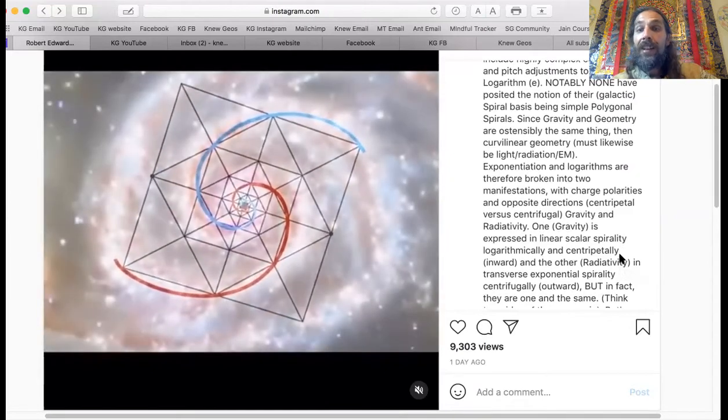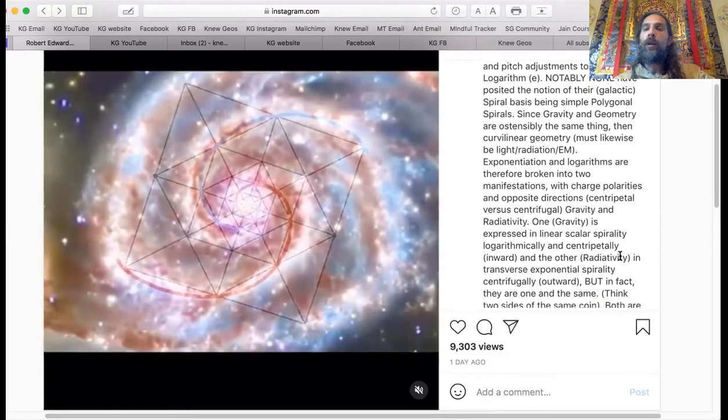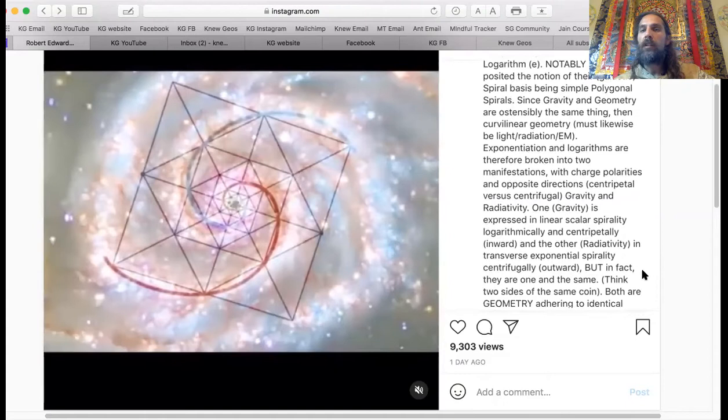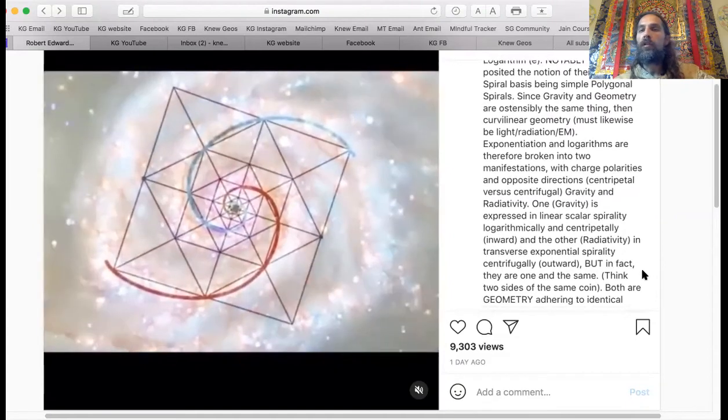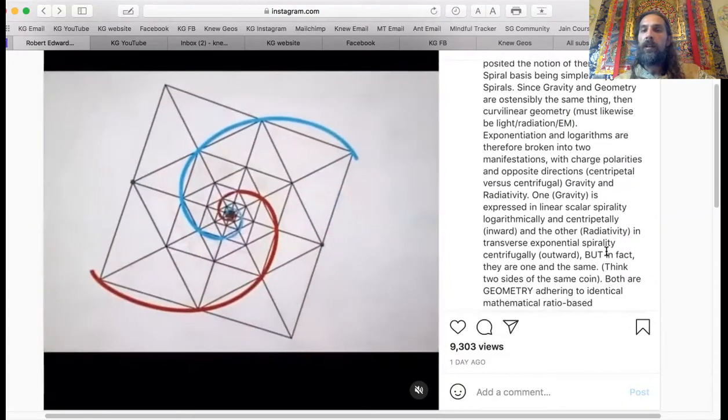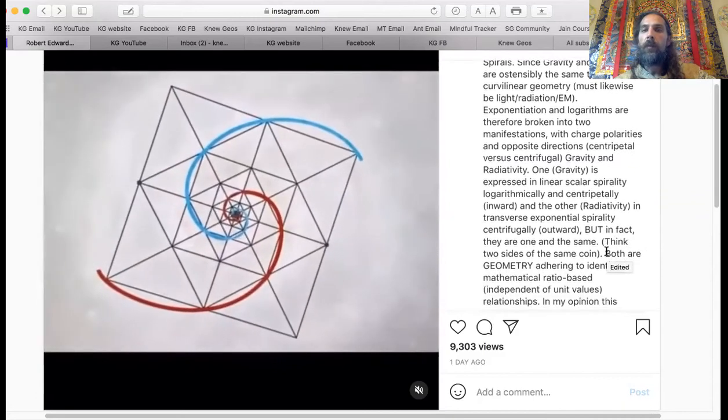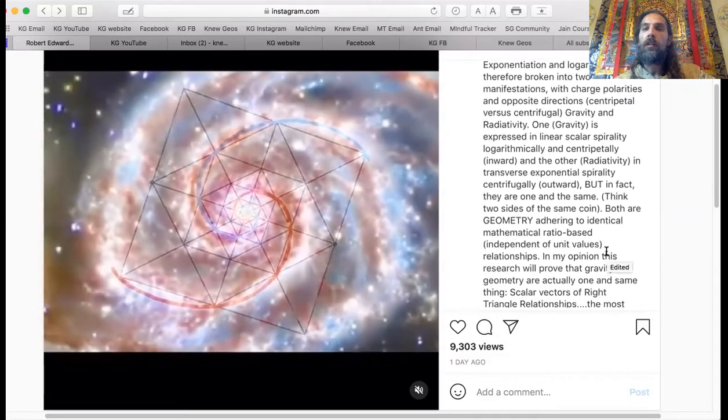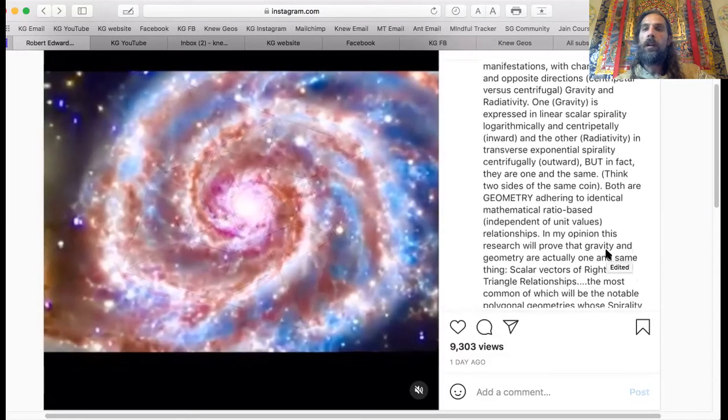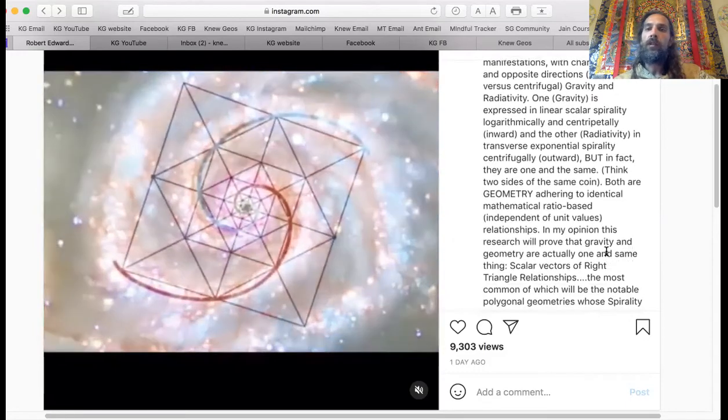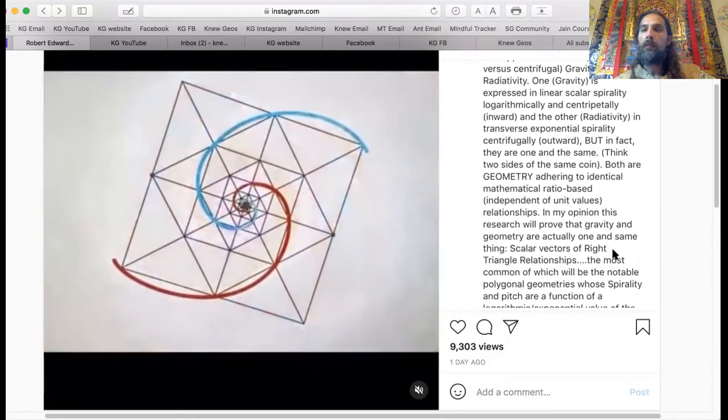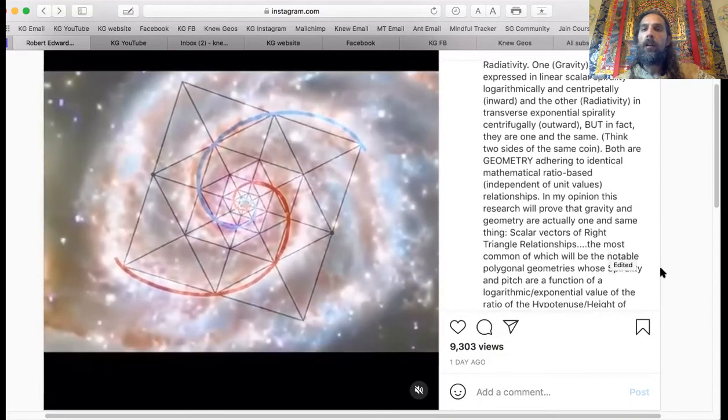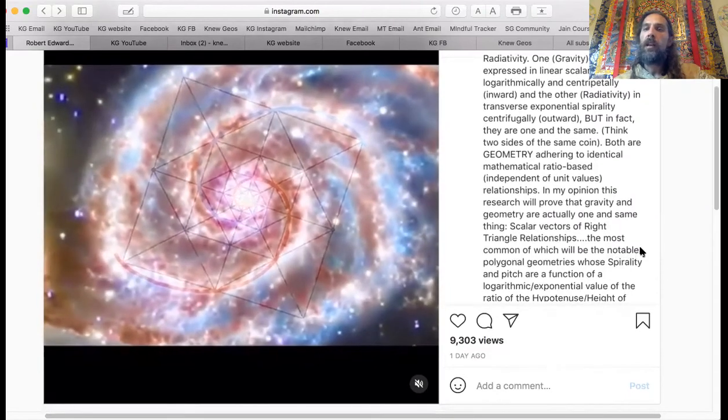Exponential and logarithms are therefore broken into two manifestations with charging polarities in opposite directions: centripetal versus centrifugal gravity and radiativity. One, gravity is expressed in linear scale spirality logarithmically and centripetally inward, and the other radiatively in transverse exponential spirality centrifugally outward. But in fact they are one in the same thing, think two sides of the same coin.